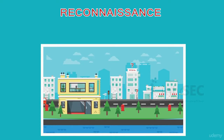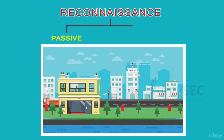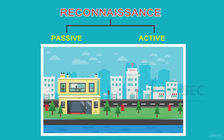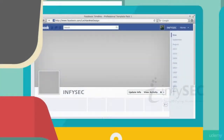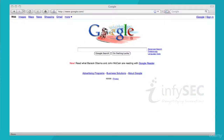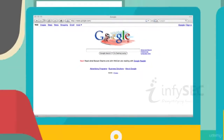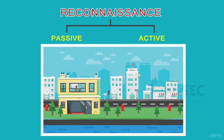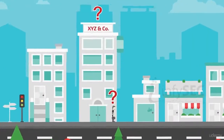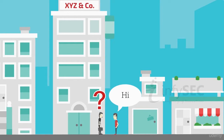Reconnaissance can be done in two ways: passive or active. Passive reconnaissance is the method of gathering information without directly intruding on the target, that is, by probing the web. Active reconnaissance involves direct intrusion on the target to collect information.